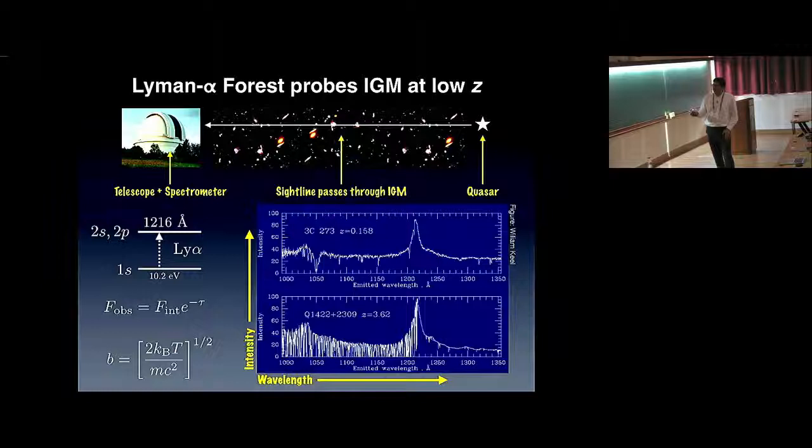This is an example of the Lyman-alpha forest in a quasar spectrum where the quasar is located at redshift 3.62. There are some familiar features: the continuum spectrum of the quasar, an intrinsic Lyman-alpha emission line, and blueward of that you see this dense forest of absorption lines. This is how the Lyman-alpha forest looks like. If you resolve these individual lines, you can measure the ionization and thermal state of the material along this sight line.